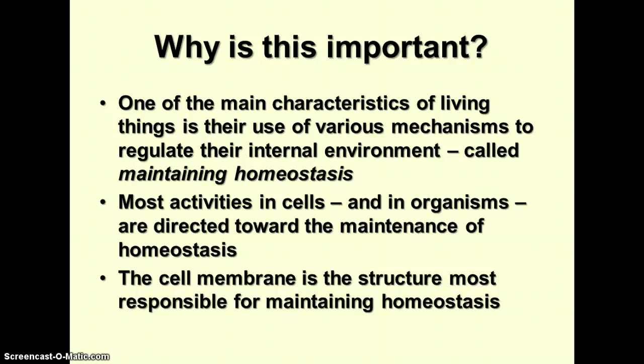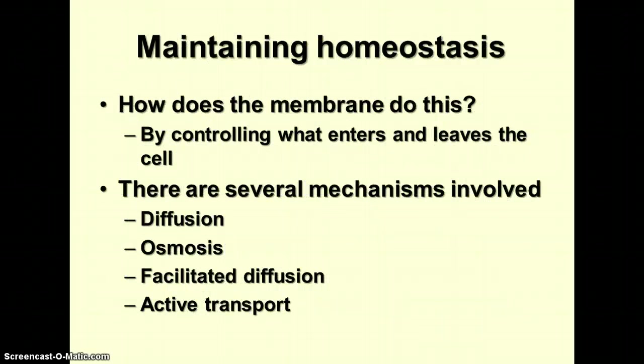So why is all this important? One of the main characteristics that living things have in common is their use of mechanisms to regulate their internal environment. This is called maintaining homeostasis — the stable internal environment that is the desired state for cells and organisms. The cell membrane is the structure most responsible for maintaining homeostasis in the cell, and consequently in the organism as well. It does this by controlling what enters and leaves the cell.